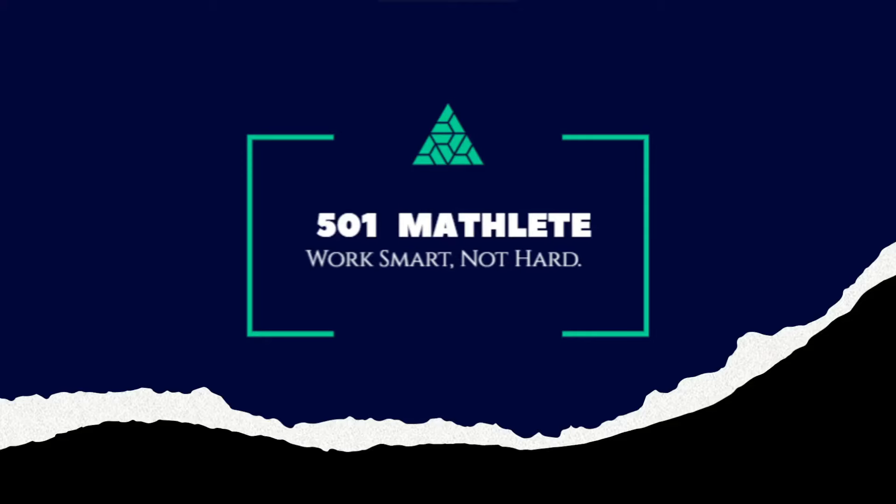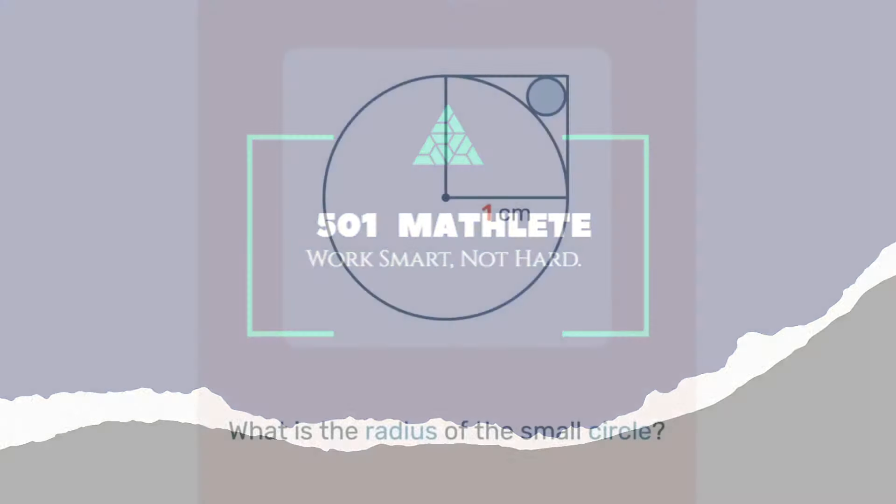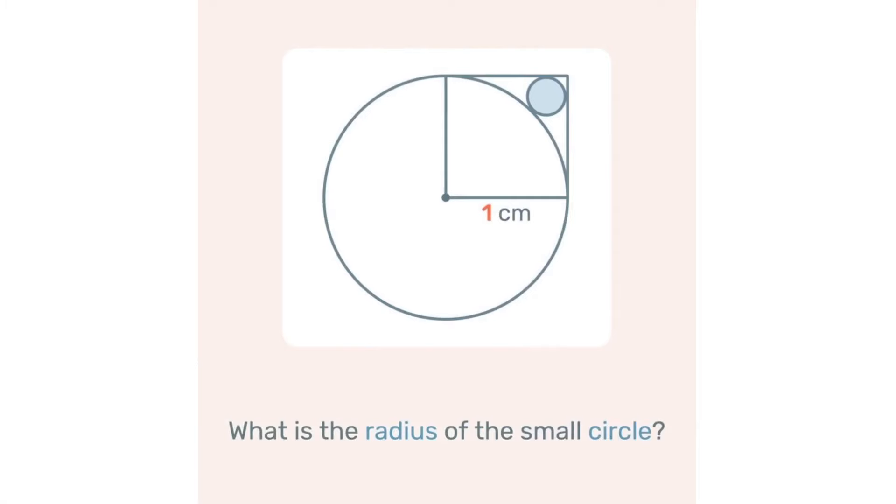Welcome to 501 Mathlete where we work smart not hard. In today's video we're given this diagram of a circle, a square, and another circle where we know the radius of the largest circle is one centimeter. With that, we're to determine the radius of this small circle.